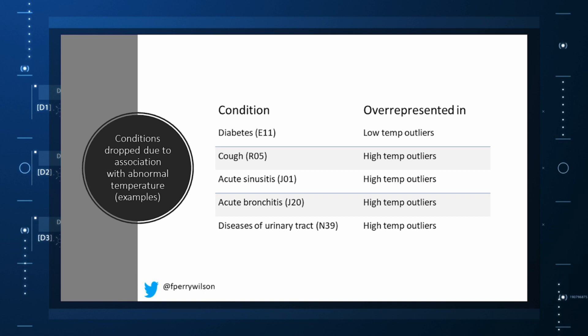The algorithm excluded people on antibiotics, with sinusitis, urinary tract infections, pneumonia, and yes, even a diagnosis of fever. The list makes sense, which is always nice when you have a purely algorithmic classification system. Okay, what do we have left? What is the real normal temperature? Ready?